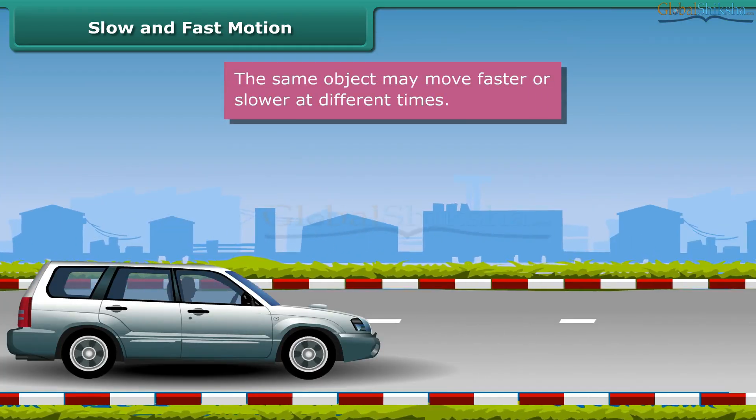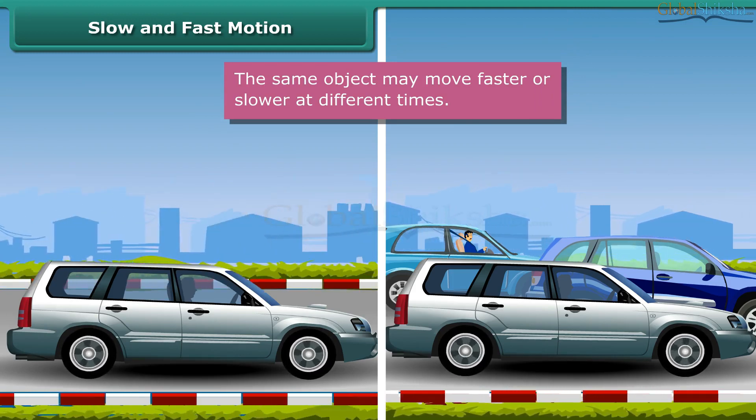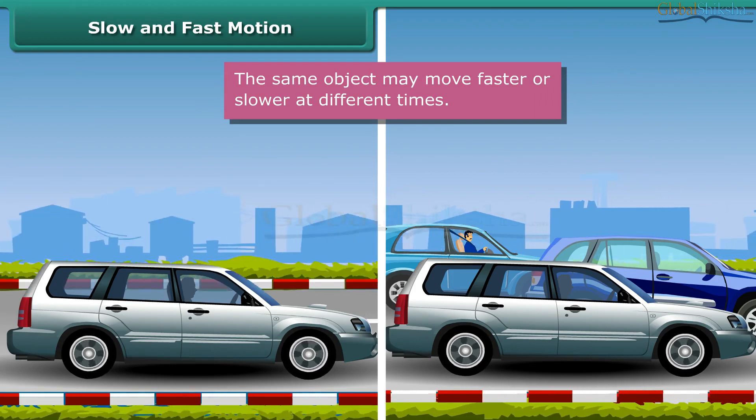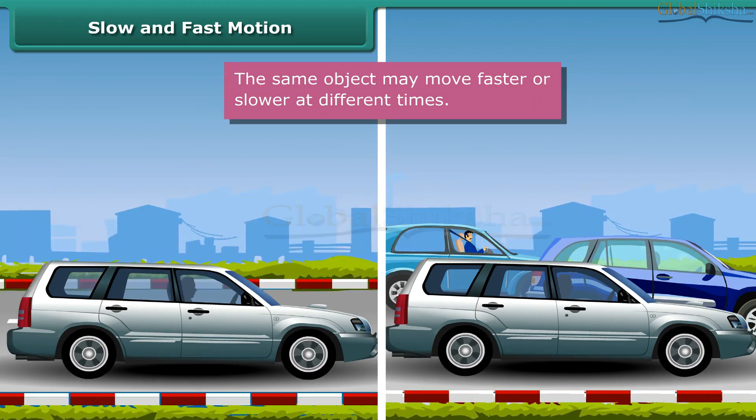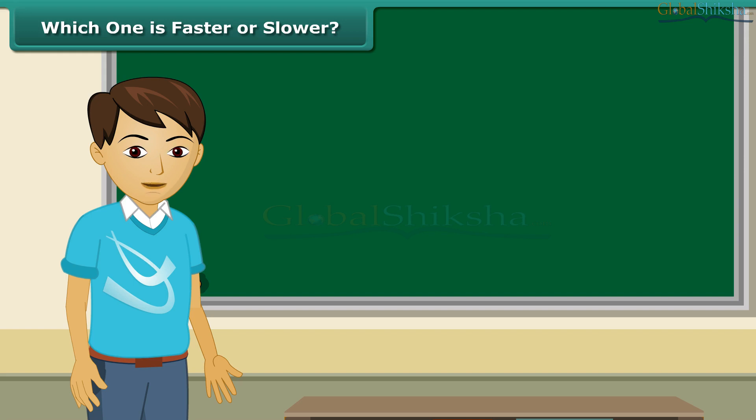Now, the same taxi moves fast on an empty road and slow on a busy road. Thus, the same object can move fast at one time and slow at another time.